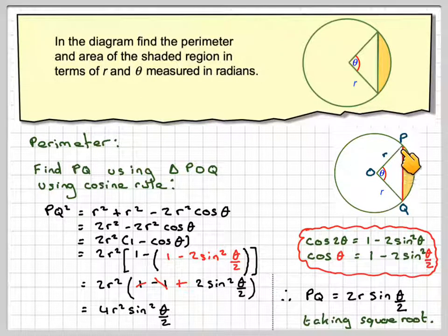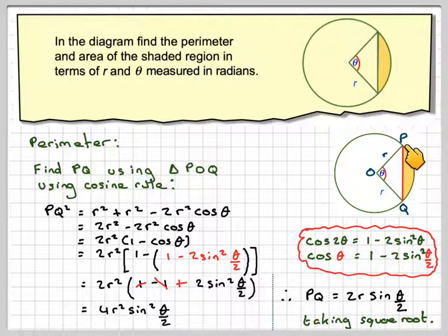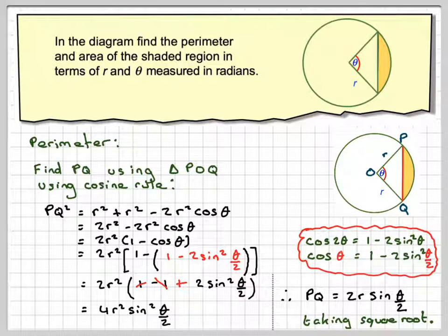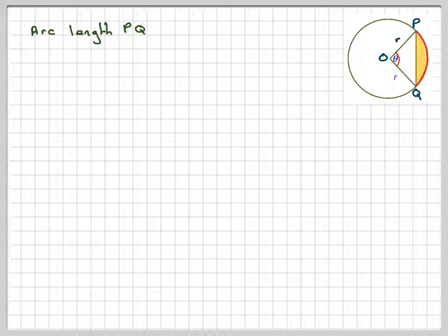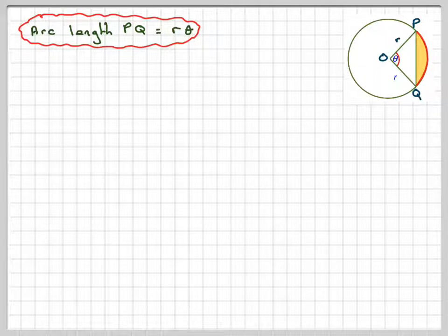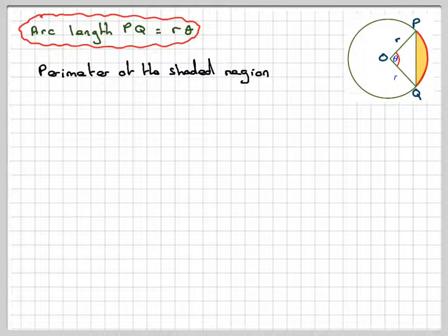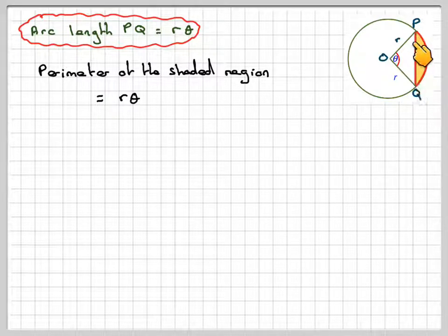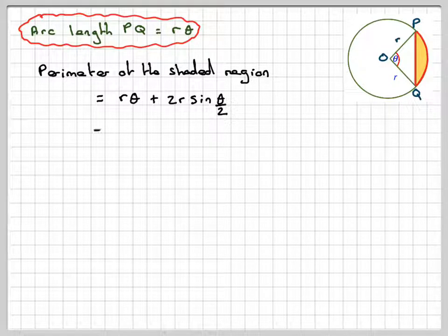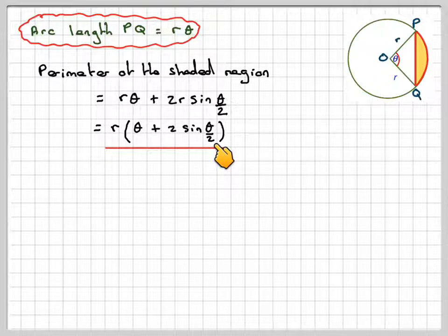So we've got PQ. Now we need to find this length here, which is the arc length. So now finding this one here, PQ, the arc length. The arc length PQ is just R theta if theta is measured in radians. So the perimeter of the shaded region will be equal to R theta, and then we need to add in the distance PQ which we've already found, which is 2R sine theta over 2. Common factor of R, so we've got R times theta plus 2 sine theta over 2.